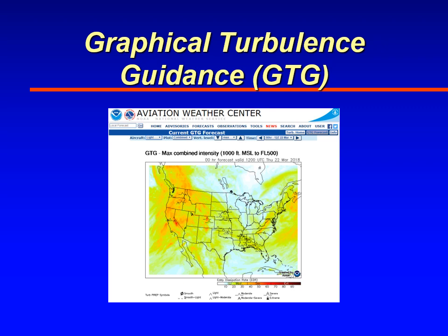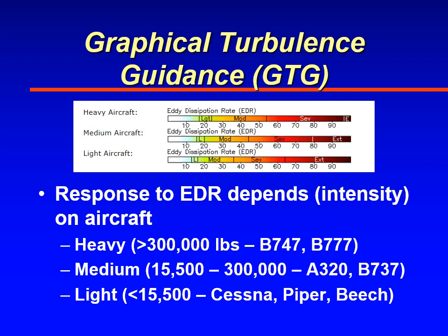On the Graphical Turbulence Guidance page, you first have to select the type of aircraft. After that, you can select the type of turbulence — mountain wave turbulence, clear air turbulence, or combined. You can also select the time out to 18 hours into the future and altitudes in 2,000-foot increments. The colors indicate EDR values from 0 to 100, and based on your aircraft selection, it will indicate whether you'll experience light, moderate, or severe turbulence. Aircraft categories are heavy (greater than 300,000 pounds, such as Boeing 747s and 777s), medium (such as A320s and Boeing 737s, from 15,500 to 300,000 pounds), and light (less than 15,500 pounds, such as Cessna-type aircraft).